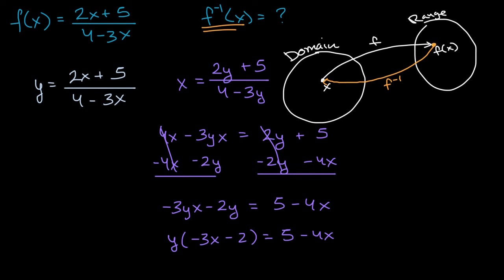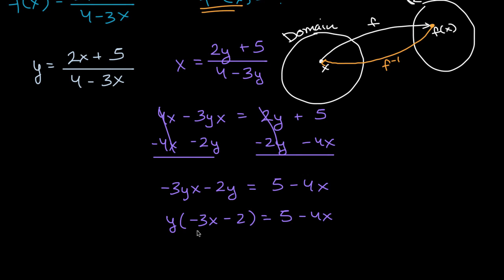And now this is the home stretch. We can just divide both sides of this equation by negative three x minus two. And we're going to get y is equal to five minus four x over negative three x minus two.